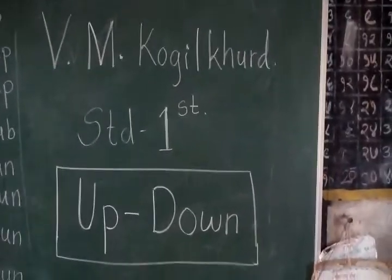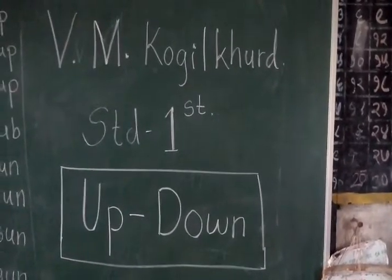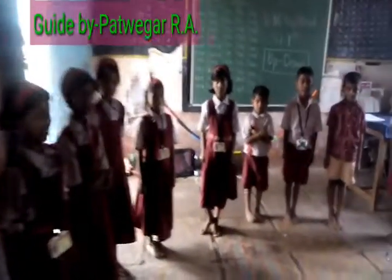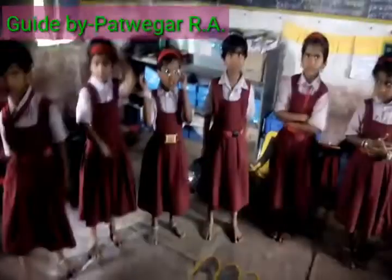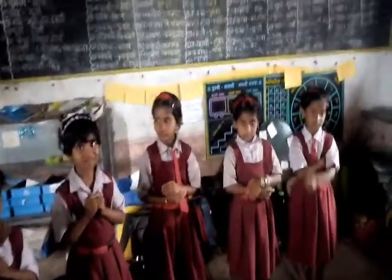Now we will see what the game is. Students, you all stand in a circle. When I say 'up,' you put your hands up. And when I say 'down,' you put your hands down. If anybody makes a mistake, he or she will be out of the game and will sit down on their seat. Are you ready? Yes. Then I will start the game.